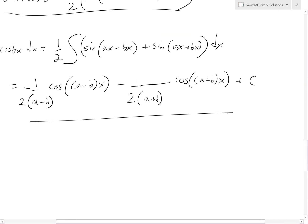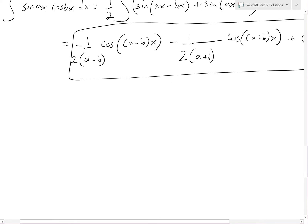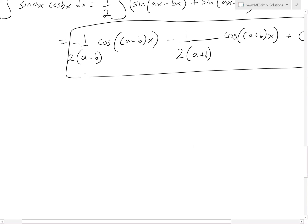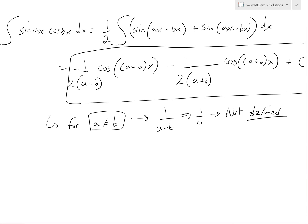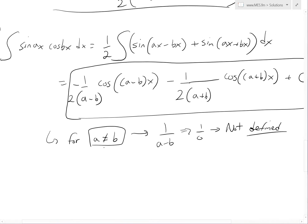The last part asks for which values of a and b the formula is valid. The formula is valid for all a and b except when a equals b, because that would make the denominator (a−b) equal to zero — giving one over zero, which is undefined and goes to infinity. So the formula holds for everything except a = b.